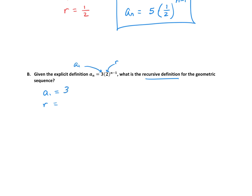So our first term is 3, and our common ratio is 2. Now we can write a recursive definition. The recursive definition has two lines — we identify the first term in the first line. So our recursive definition is 3 when n equals 1. Then the second line: how do you get any term after that? You take your common ratio 2 and multiply it by a sub n minus 1, the previous term. So you take 2 times your previous term, and follow that rule for every term after 1.